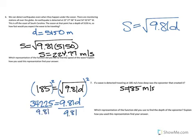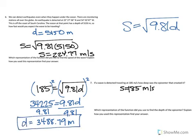And when we divide that by 9.81, we're going to get 3,488.79. So the depth is 3,488.79 meters.